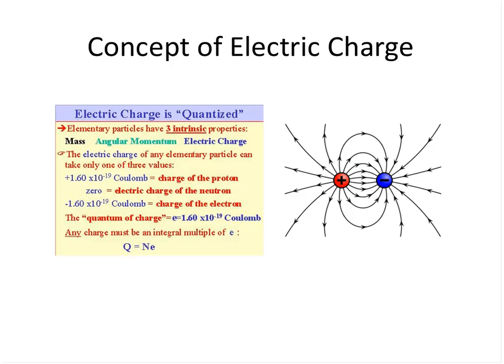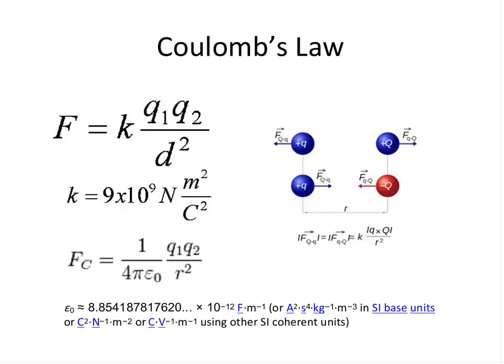An electric field is created between charges — it emanates from a positive charge and ends on a negative charge. These are lines of force. If you bring another charged particle into the vicinity, you will experience a force on it. Coulomb's law says that two charged particles attract if they are opposite and repel if they are similar. The formula shows the relationship between the magnitude of the two charges, the distance between them, and the Coulomb constant 1/(4πε₀), where ε₀ is the permittivity of free space. As you move charged particles apart, the force weakens; bring them closer and it gets stronger.